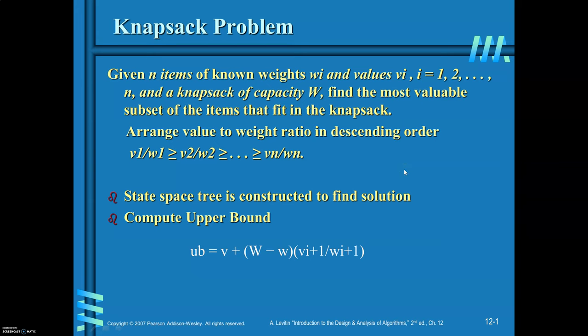In this video, I will explain how you can find a solution for the knapsack problem by applying the branch and bound design technique. The problem statement is: given N items of known weights WI and values VI, where I ranges from 1 to N, and a sack of capacity W, you are required to find the most valuable subset of items that fit into the knapsack. The total weight of items filled into the sack should not exceed the capacity of the sack, and the value must be maximized.